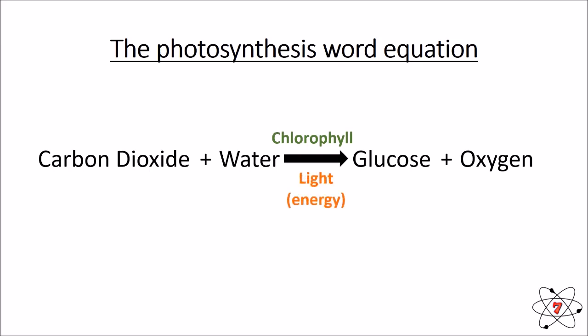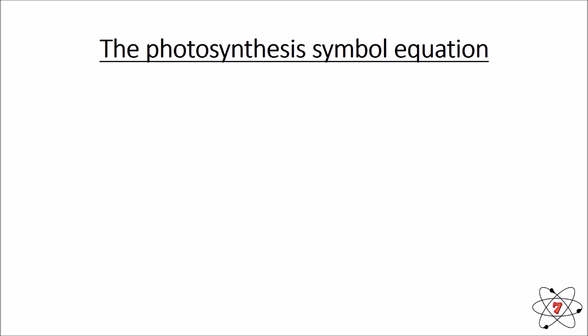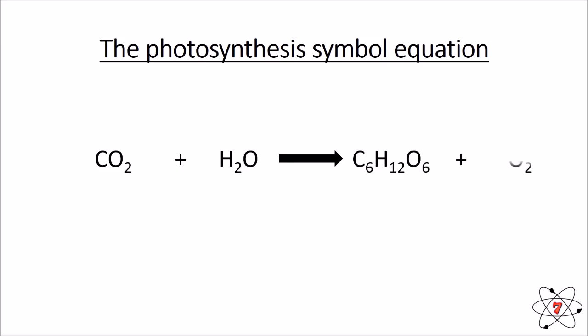We also need chlorophyll and light energy for photosynthesis to occur. The symbol equation is: CO₂ + H₂O → C₆H₁₂O₆ + O₂. The arrow means a chemical reaction has occurred — it is not an equal sign. In a chemical reaction, new chemicals are made that are different from those we started with, so we always use an arrow to represent that a chemical reaction has occurred.